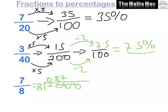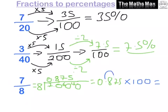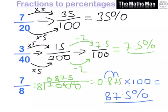Does 8 go into 40? Yes, exactly 5 times. So our decimal is 0.875. To change that to a percentage, we multiply by 100 — the decimal point moves two spaces — giving us 87.5%. That's how we change fractions to percentages.